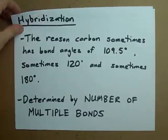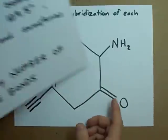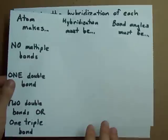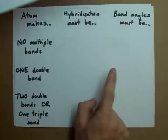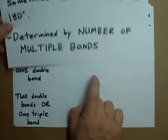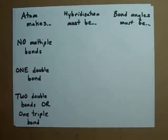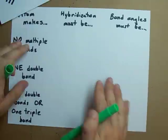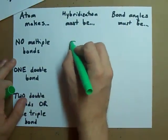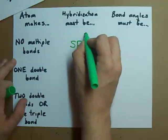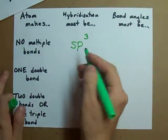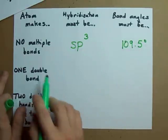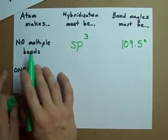The way you can calculate the hybridization of each atom in this molecule is to see how many multiple bonds the atom has. If the atom does not make any multiple bonds with any other atoms, then the hybridization is going to be sp3. The bond angle in that case is 109.5 degrees. We're counting double bonds and triple bonds here.